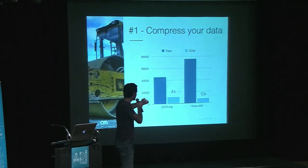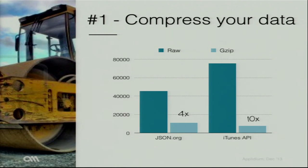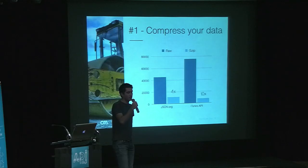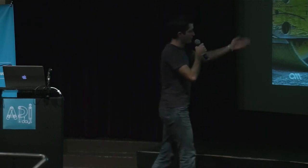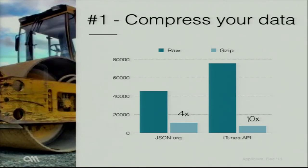I took two samples. The first sample is a sample JSON file from json.org, and the second one is a sample from the iTunes API. As you can see, the compression rate is really huge — it can be up to a 10x factor. So think about it this way: you're building a mobile app using the iTunes API, and instead of waiting one second, you're going to wait ten seconds. So really zip your content.